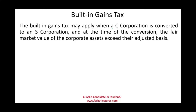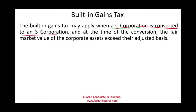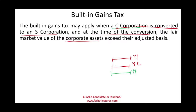The built-in gains tax may apply when a C corporation is converted to an S corporation, and at the time of the conversion the fair value of the corporate assets exceeded the adjusted basis. For example, in year one and two we were operating as a C corporation, and in year three we decided to be an S corporation. Certain assets in the C corporation had a fair value greater than the adjusted basis, meaning we have a gain on those assets.